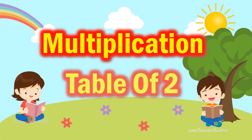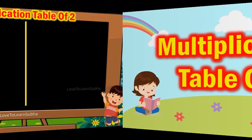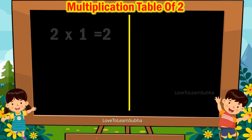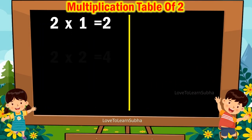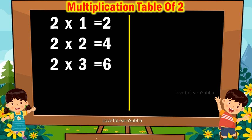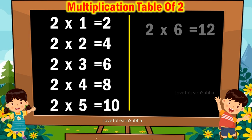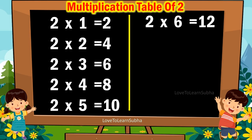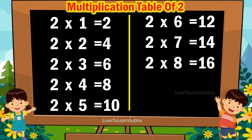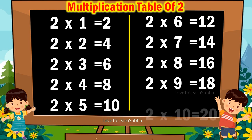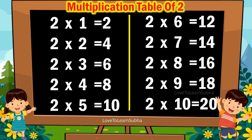Multiplication table of 2. 2 1s are 2, 2 2s are 4, 2 3s are 6, 2 4s are 8, 2 5s are 10, 2 6s are 12, 2 7s are 14, 2 8s are 16, 2 9s are 18, 2 10s are 20.